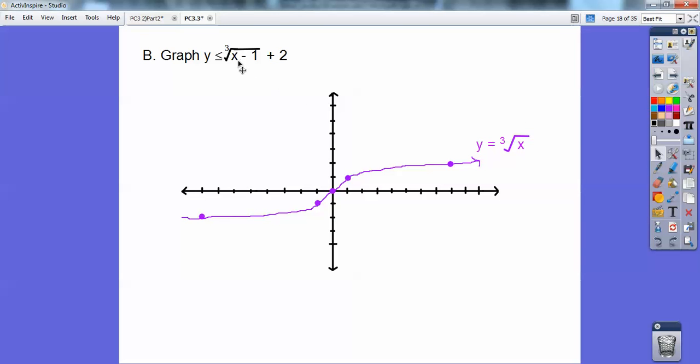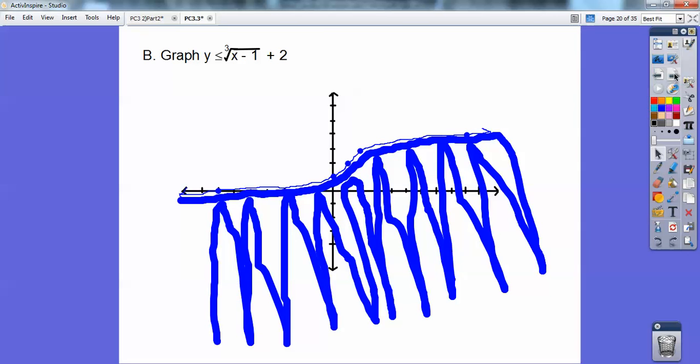All right, and then this little dude is going to shift it to the right 1 and up 2. So I'm just going to take this graph and shift it to the right 1 and up 2. Okay, so there's that one right there. And then we just got a shade. So test 0, 0, 0, 0 satisfies that. So it's going to be shading on that side of that. Okay, if 0, 0 didn't satisfy that inequality, then I'd shade this side up here.